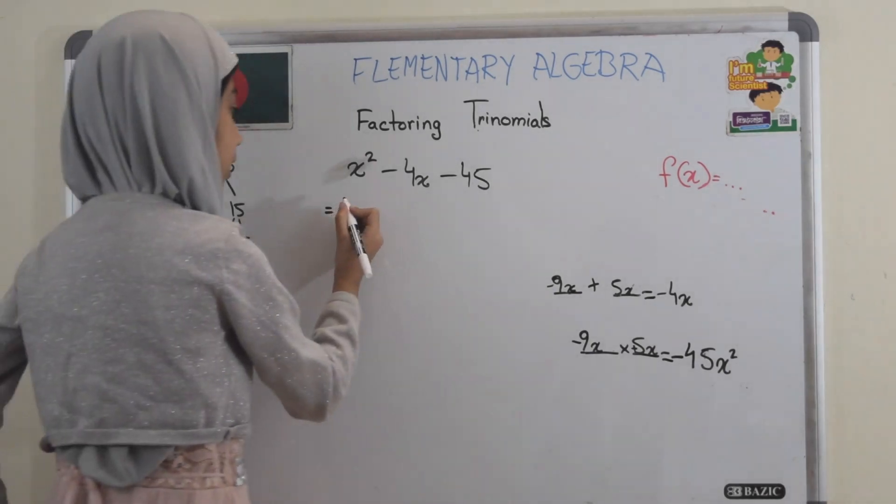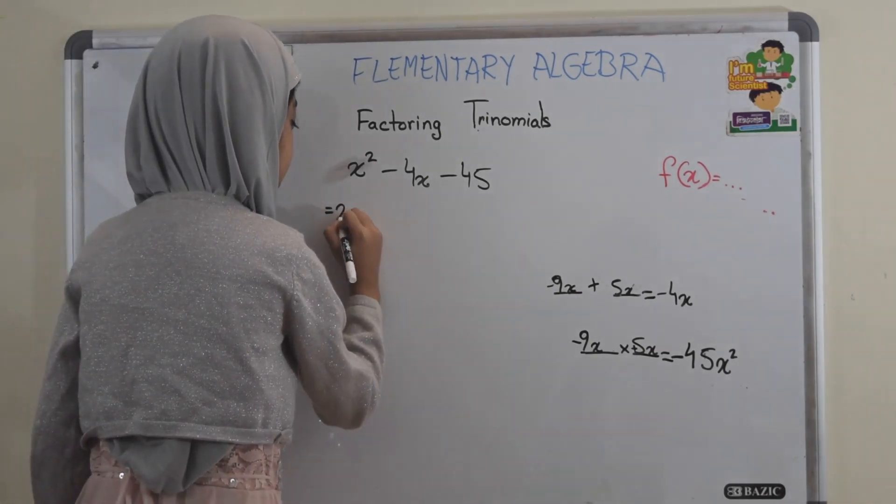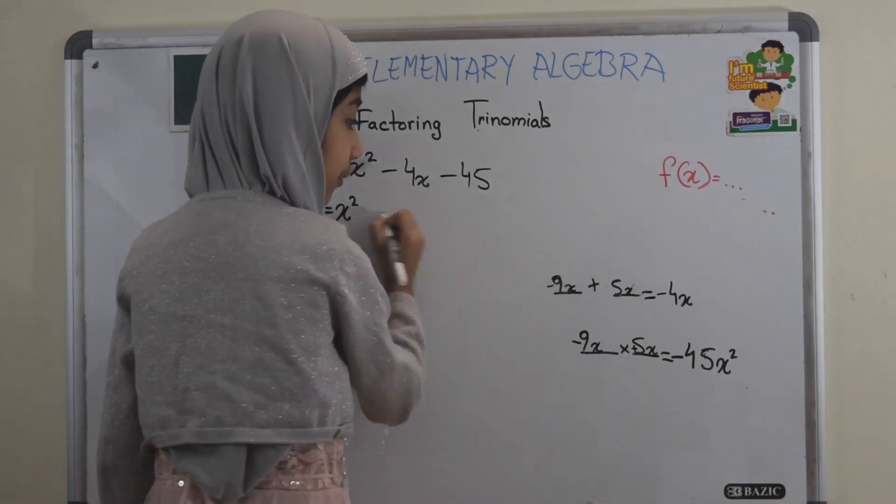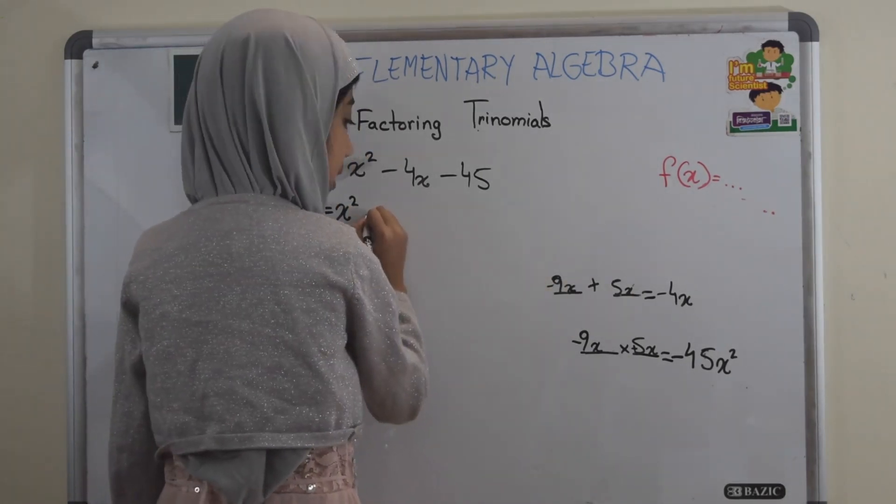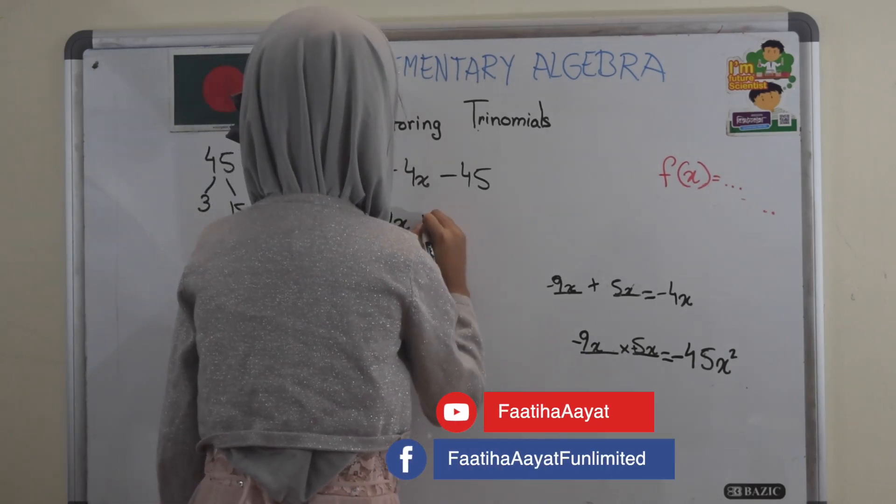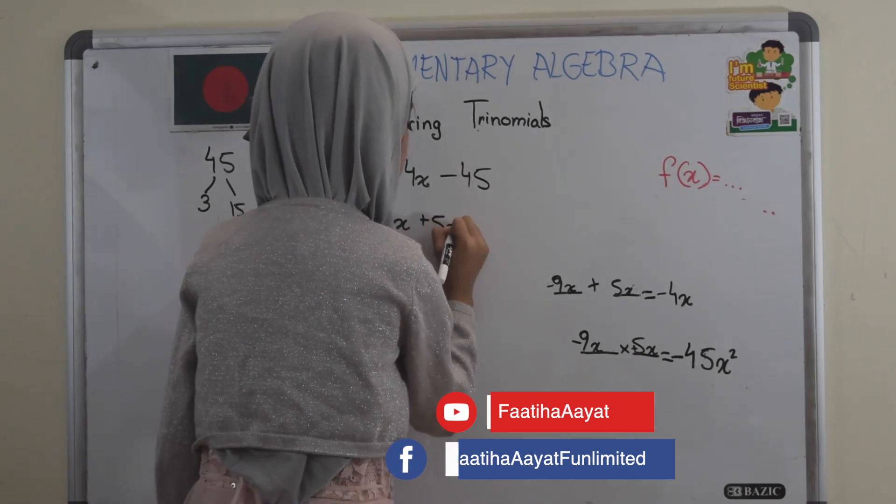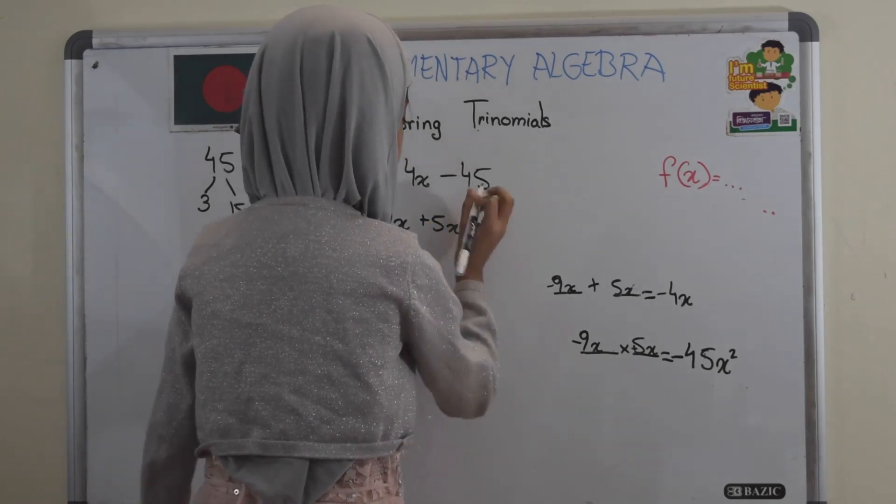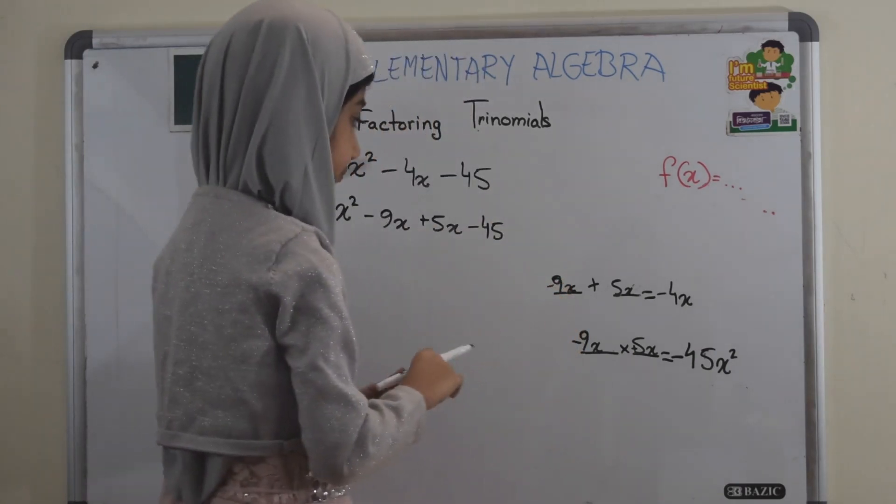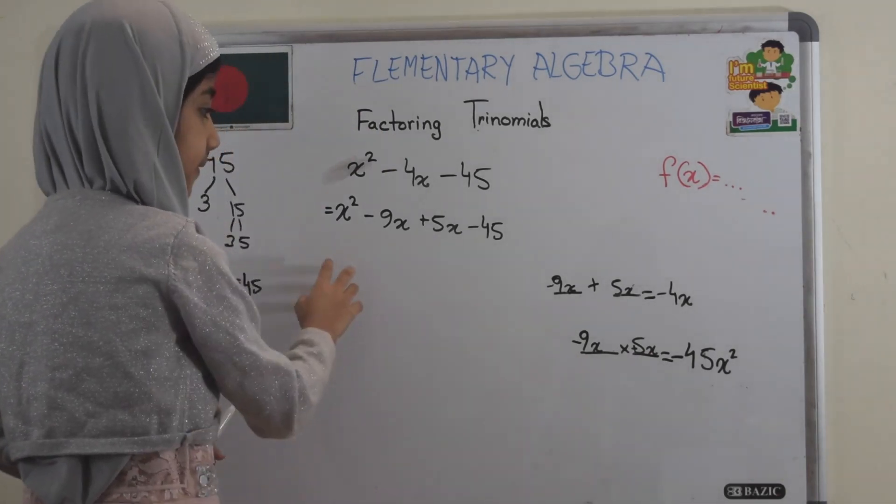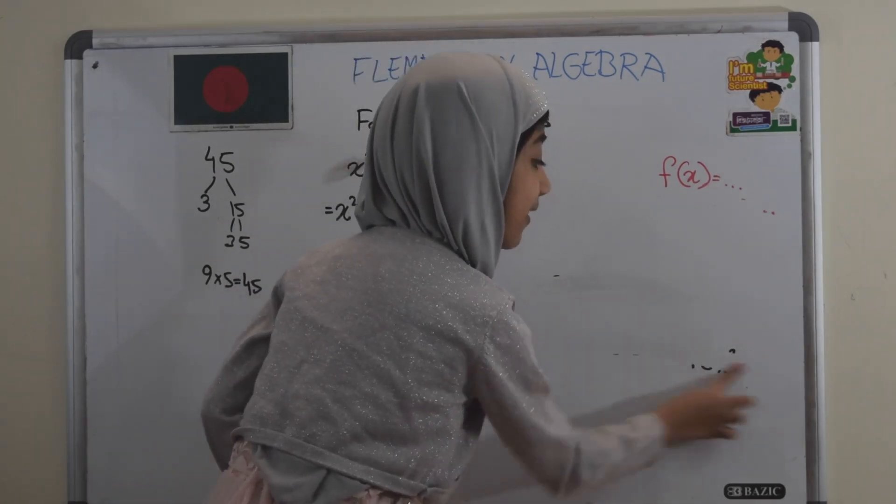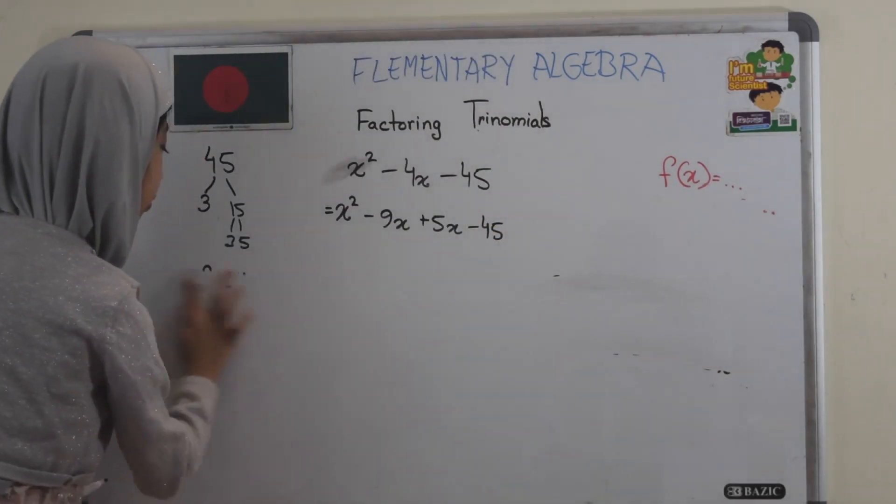So, for our next line here, we've got to keep x squared, the total number. Now, we've got to put the total numbers: x squared minus 9x plus 5x minus 45. So, now, the math is not actually over yet.